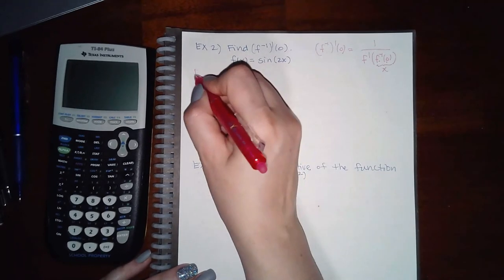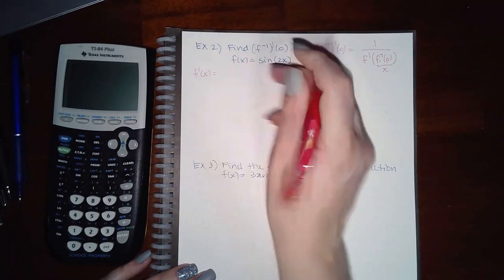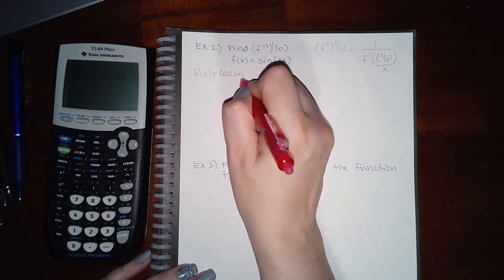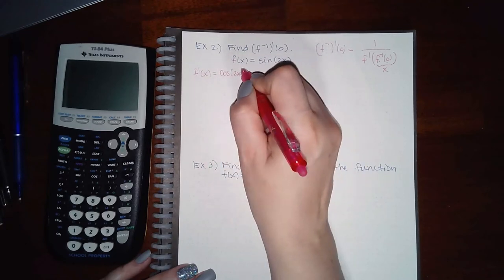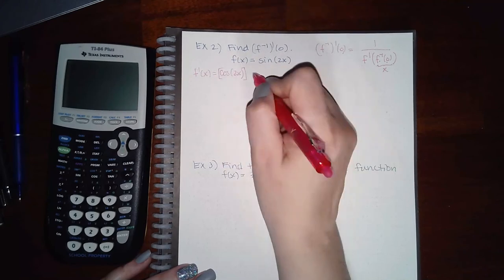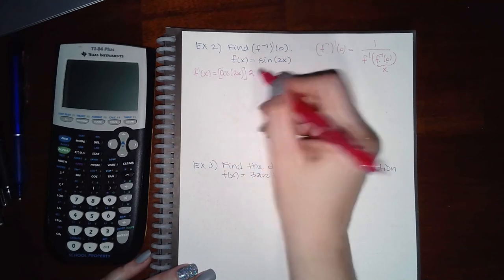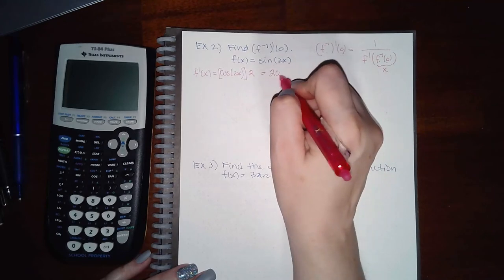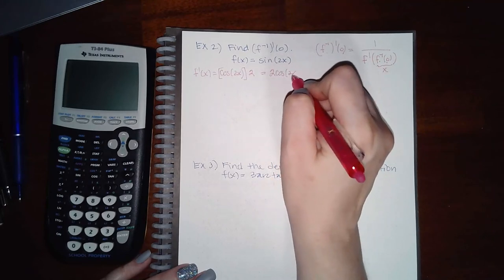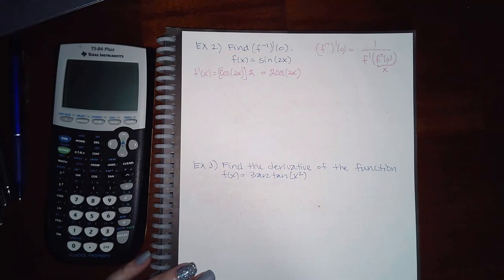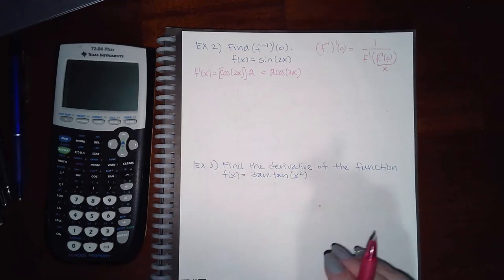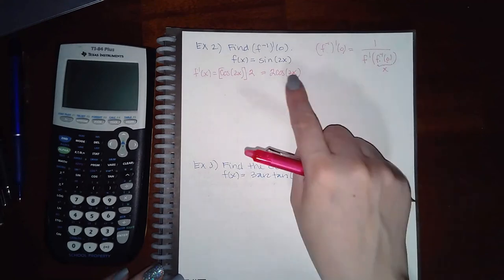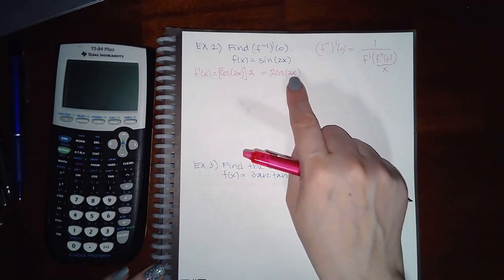First, take the derivative of f(x) = sin(2x). Using the chain rule, the derivative of sin(2x) is cos(2x) times the derivative of 2x, which is 2. So f′(x) = 2cos(2x).